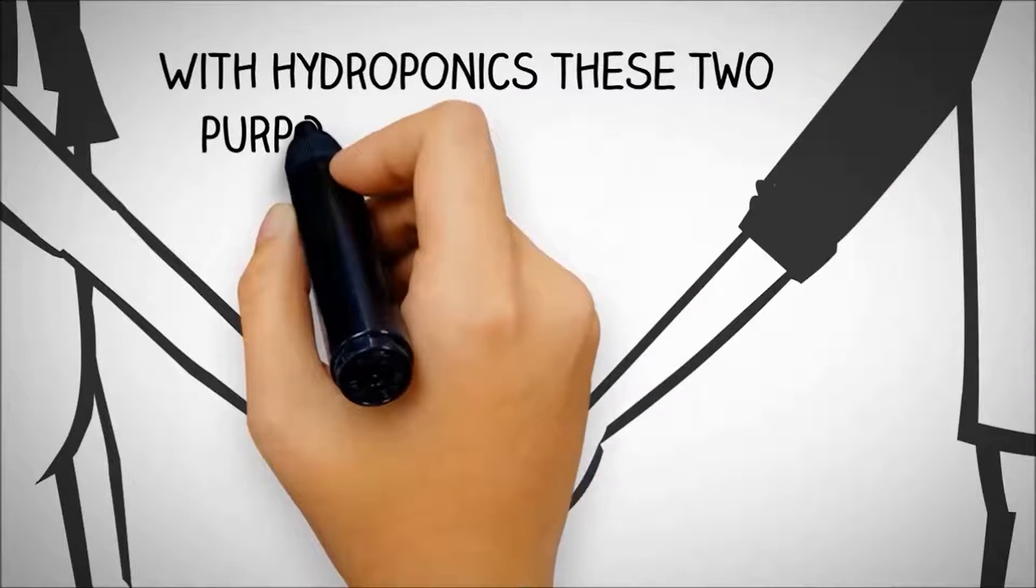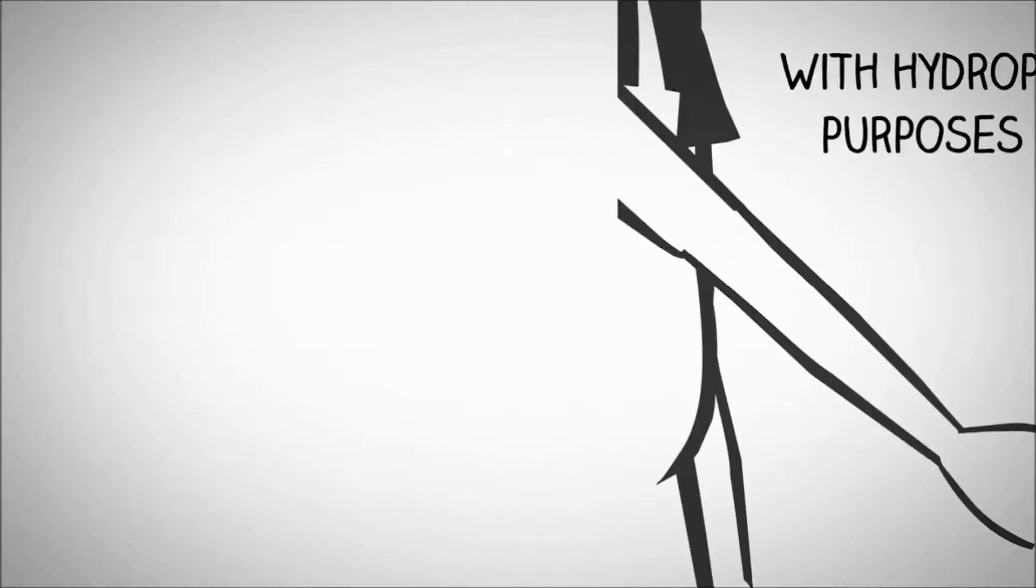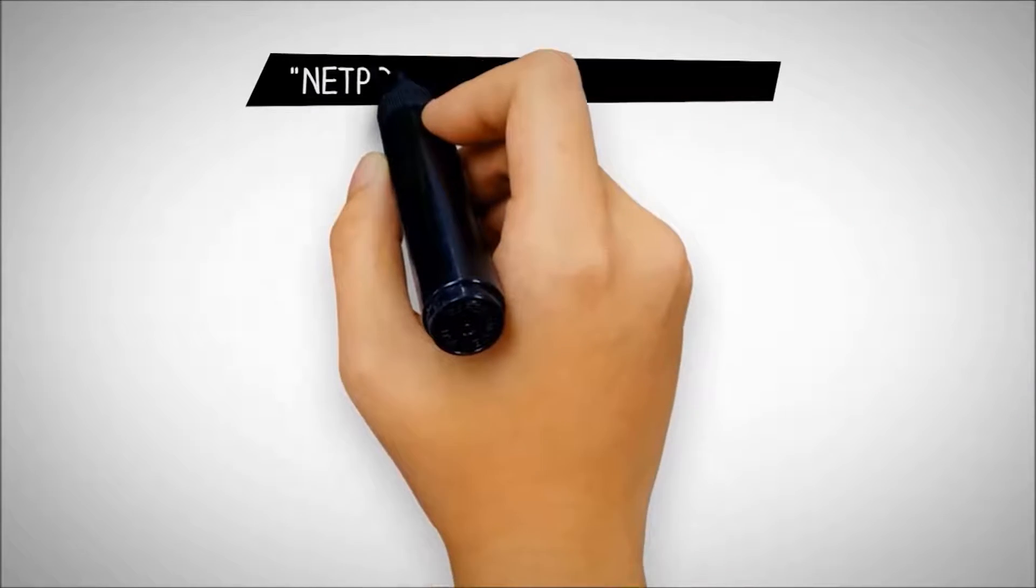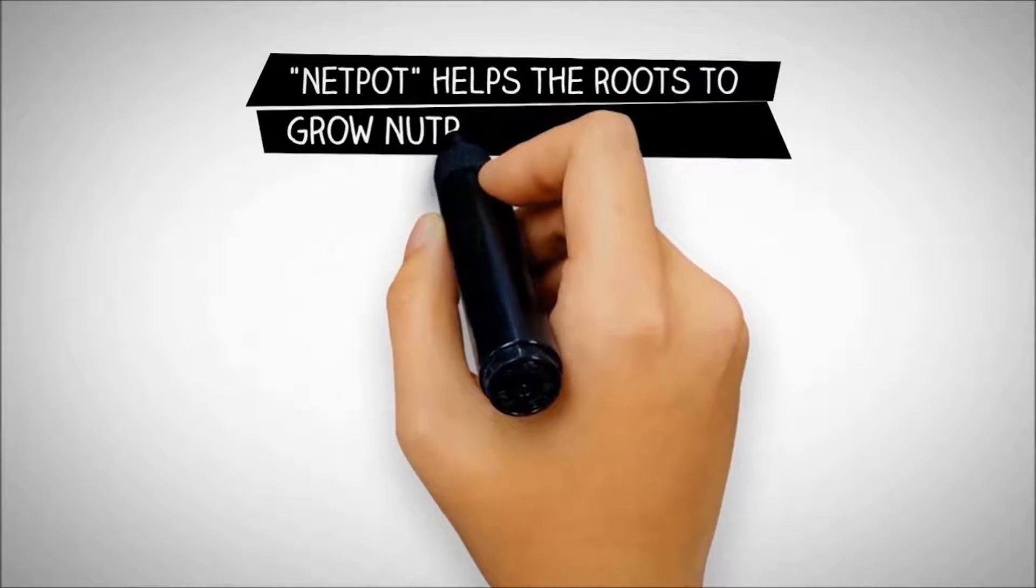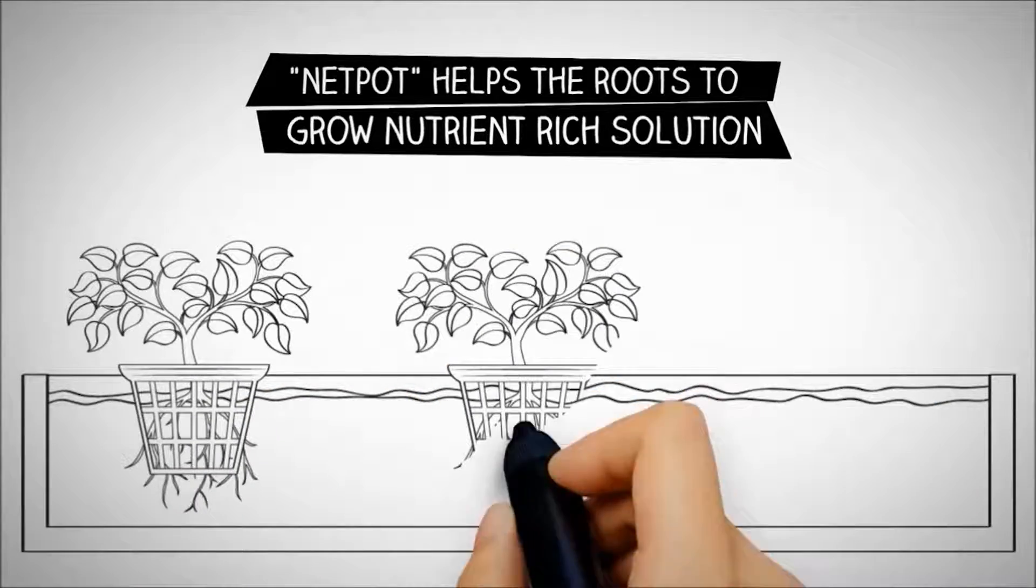With hydroponics, these two purposes are handed off. The plant is supported by a net pot, which allows the roots to grow through into a nutrient-rich solution below.